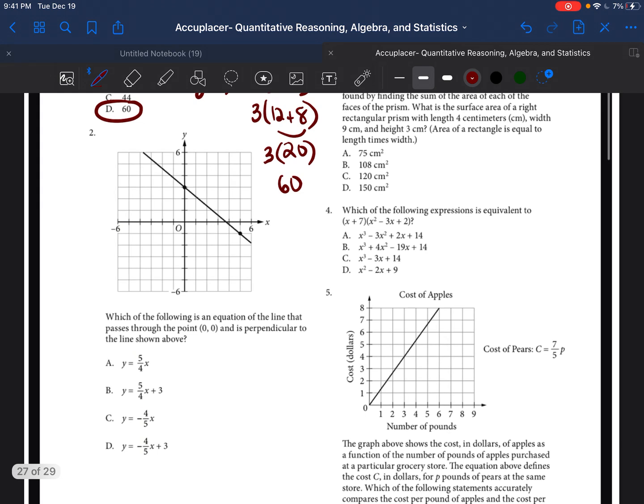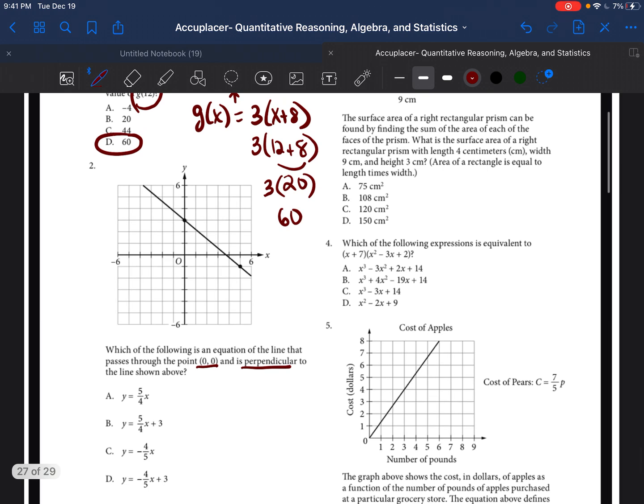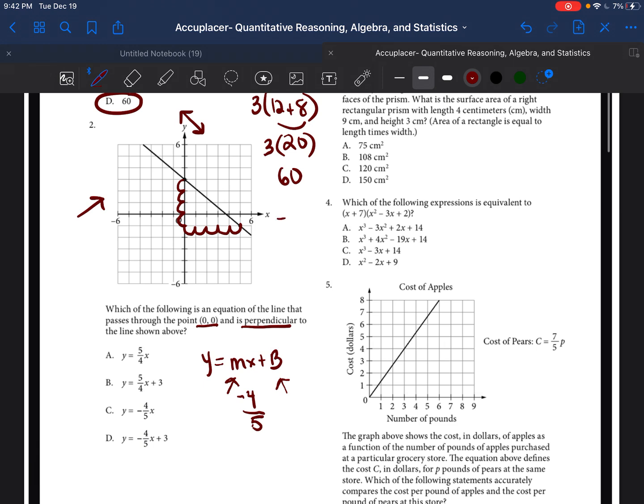It says which of the following is an equation of a line that passes through the point (0,0) and is perpendicular to the line shown above? Okay, so we have to figure out what the equation of this line is so that we can find a line that's perpendicular. So if we remember, a line is written as y = mx + b. The b represents the y-intercept. The m represents the slope. So the slope of this line is a negative line because it's going down. So it's going down 1, 2, 3, 4. So it's going down 4. And it's going over 1, 2, 3, 4, 5.